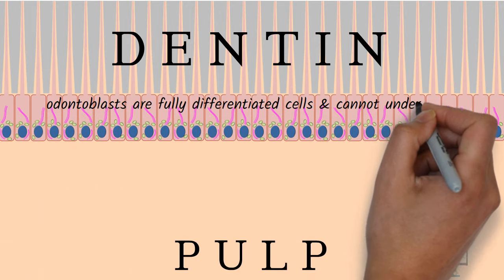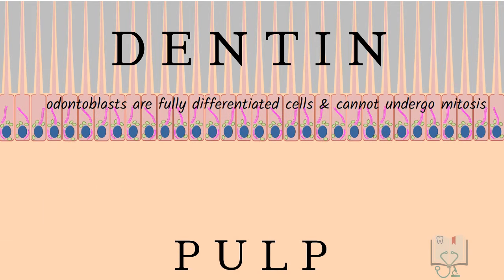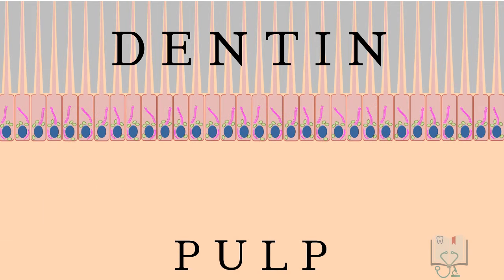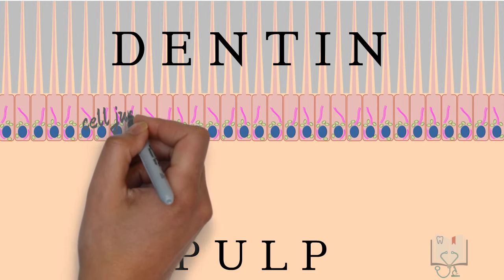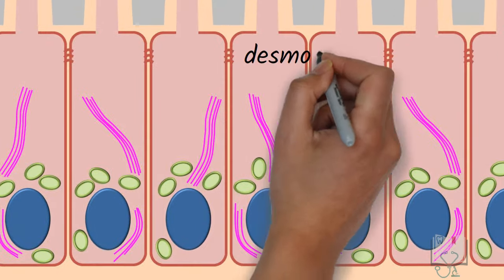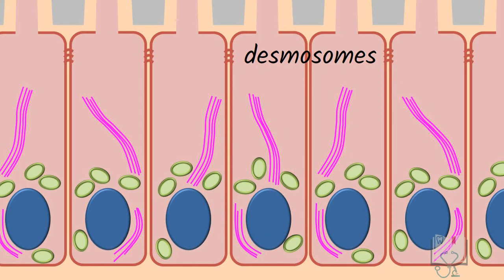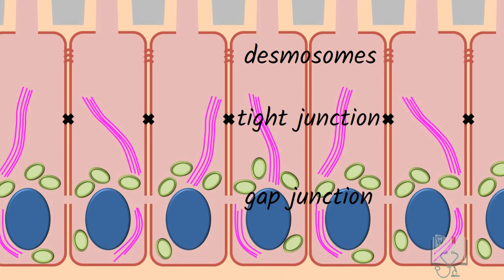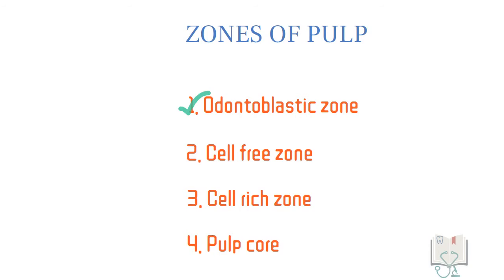Odontoblasts are fully differentiated cells and therefore cannot divide. Numerous cell junctions are seen in odontoblasts: desmosomes, which provide mechanical union to the cells; tight junctions, which form a permeability barrier between the pulp and dentinal tubules; and gap junctions, which help in communication between odontoblasts.